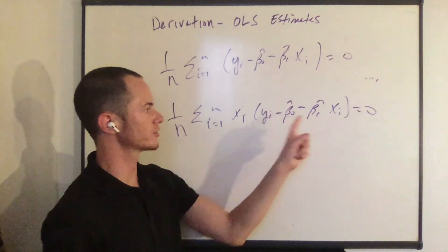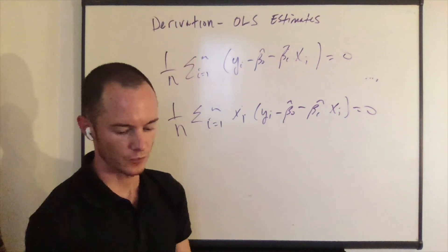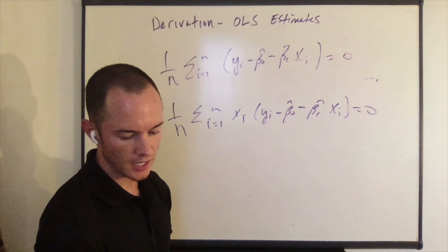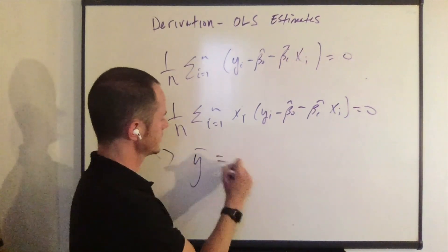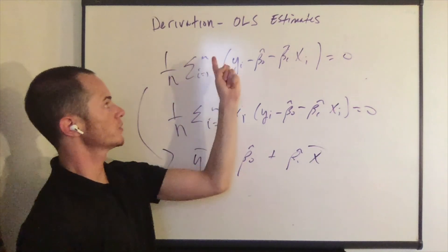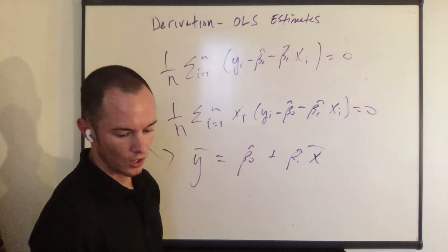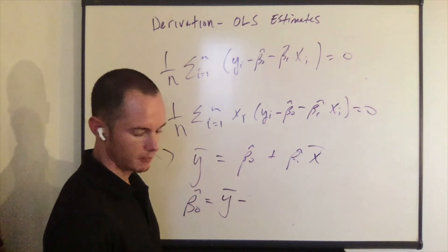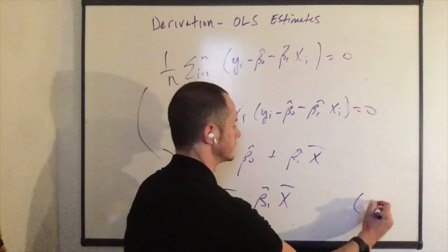Observe that the first equation can be rewritten as follows. Y bar equals beta naught hat plus beta one hat times x bar, because one over n times the sum of y_i is y bar — the average of y — and similarly for x_i you get x bar. So writing this in terms of beta naught hat, we get that beta naught hat equals y bar minus beta one hat times x bar. Let's call this equation nine.